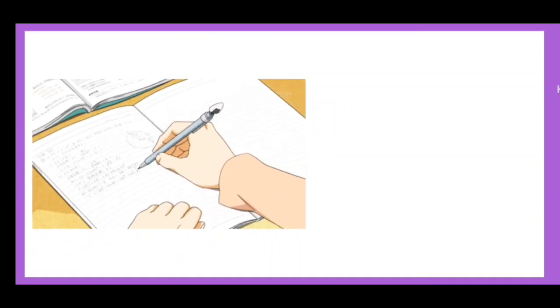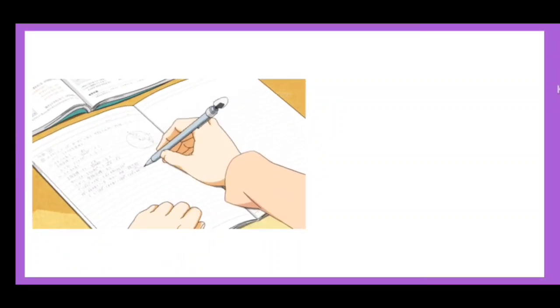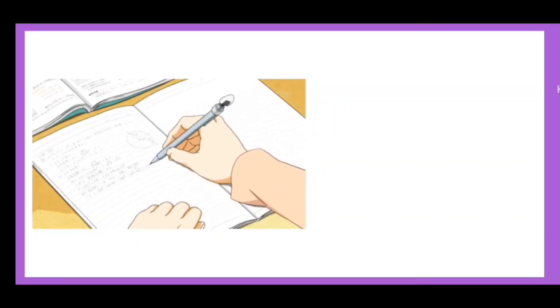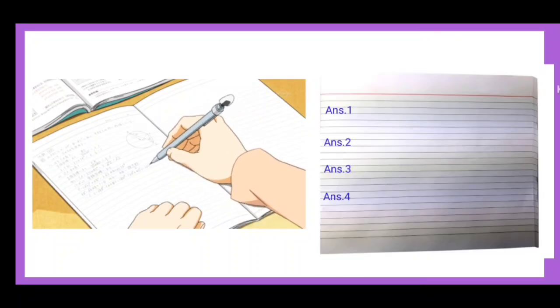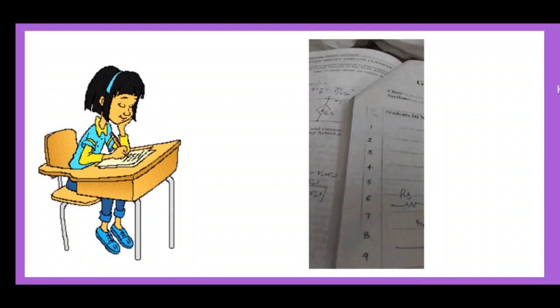What you should do is attempt the paper sequence-wise — attempt question number 1 first, then 2, then 3, then 4, and so on. Start each new question on a new line. Try to attempt all questions in sequence order.